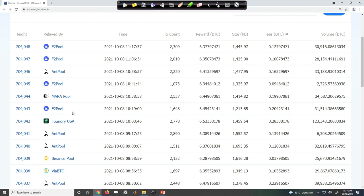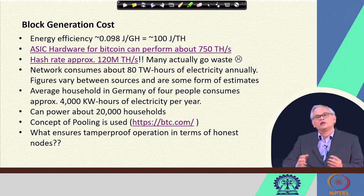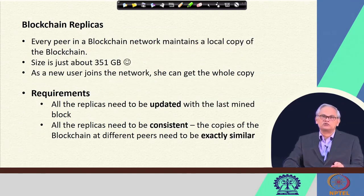Overall, it indeed needs a huge amount of resources and computation power to generate blocks in Bitcoin. This also ensures tamper-proof operation in terms of honest nodes. If the majority of nodes with computation power are honest, then the Bitcoin network will work as expected. The principle is that the majority of computational power should be in the hands of honest nodes — this is the foundational principle of the Bitcoin network and many other blockchain networks.